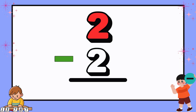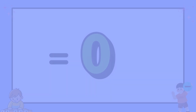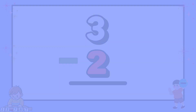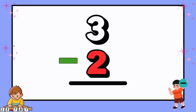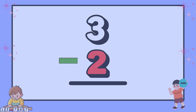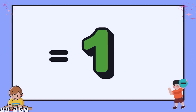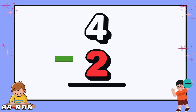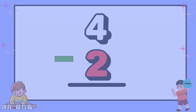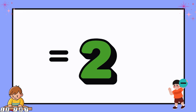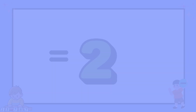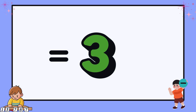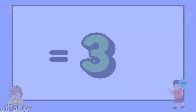First, 2 minus 2 equals 0. Next, 3 minus 2 equals 1. Then, 4 minus 2 equals 2. After that, 5 minus 2 equals 3.